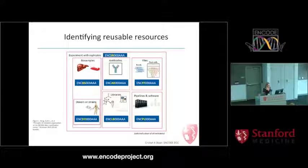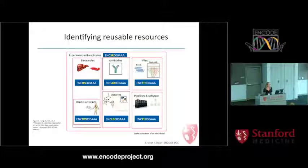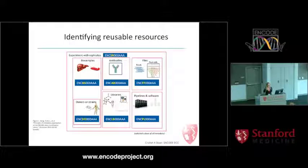We identify reusable resources by giving them actual names, so people can talk about a biosample as ENCBS000AAA. The encoding system of the accessions is highlighted: an experiment has 'SR' in it, a file has 'FF', an antibody has 'AB'. All of these identifiers allow you to share these items precisely when discussing a pipeline.